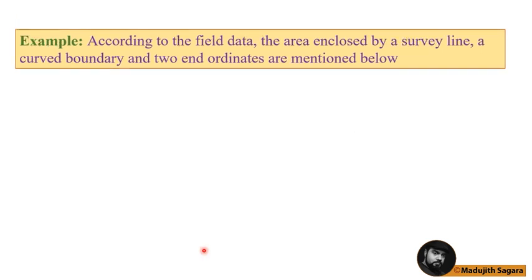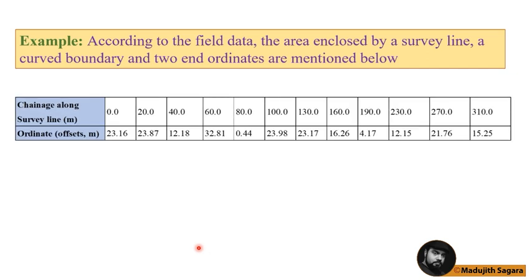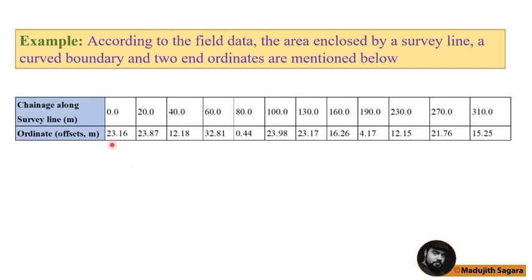Then I will give you another example. Here you can see the same type of example is here, but here this is somewhat different. Zero to 100 chainage distance is 20, but 100